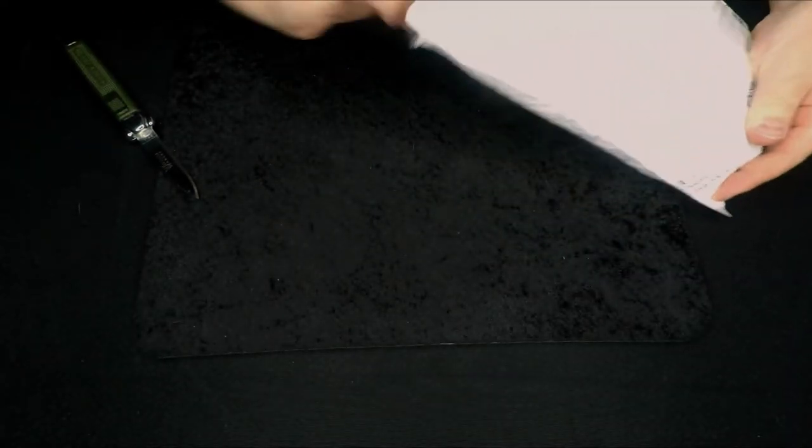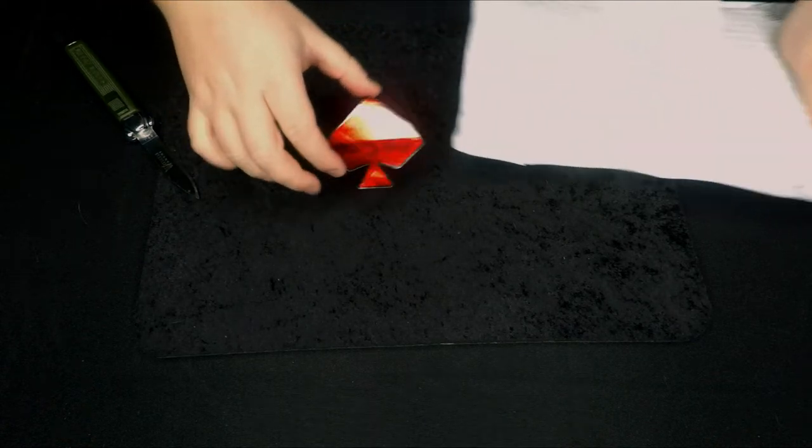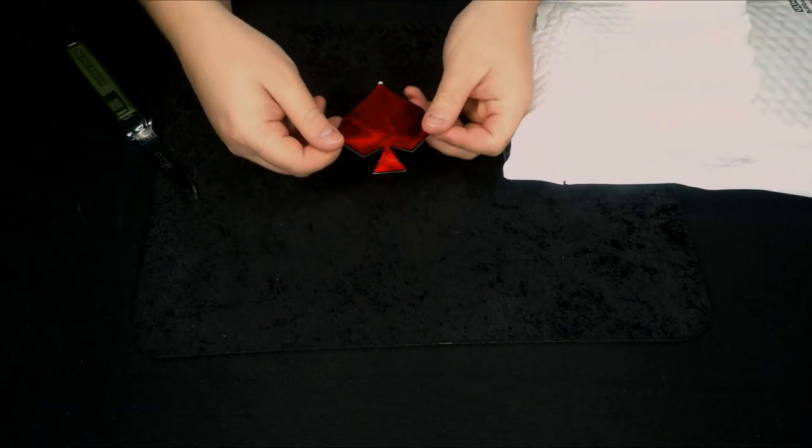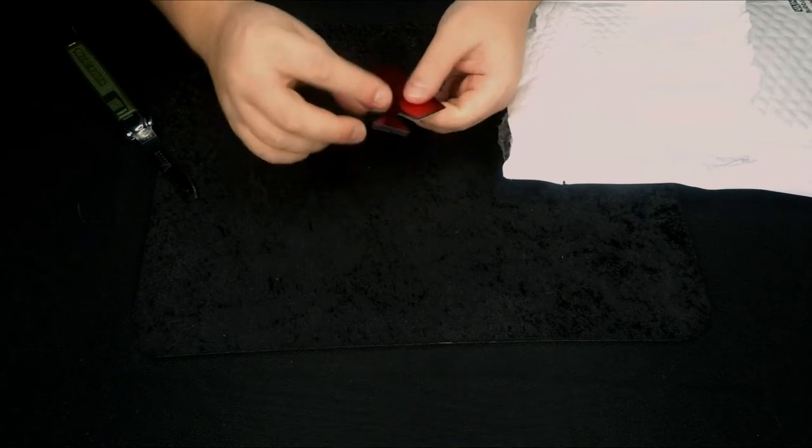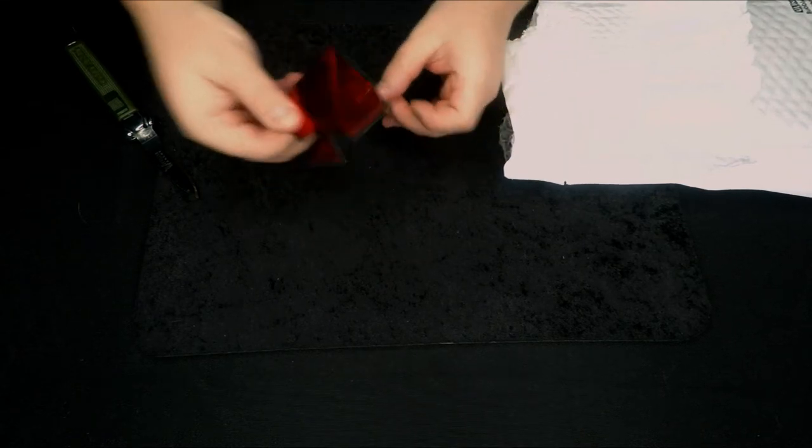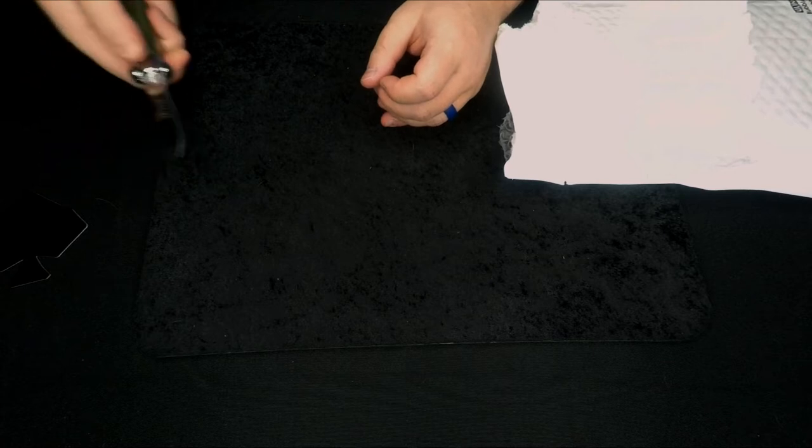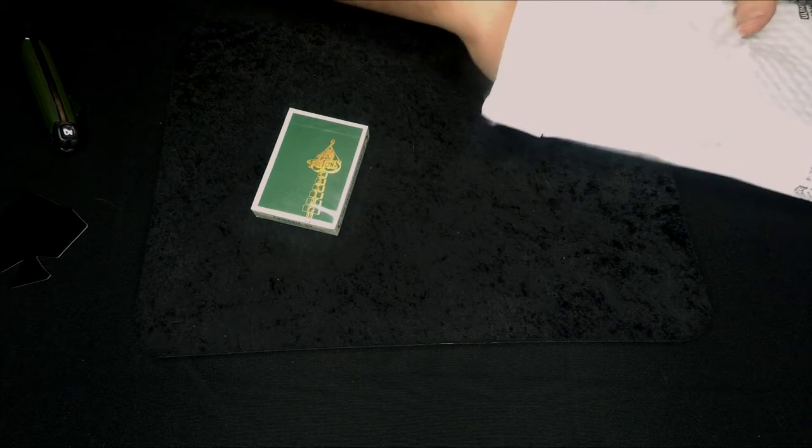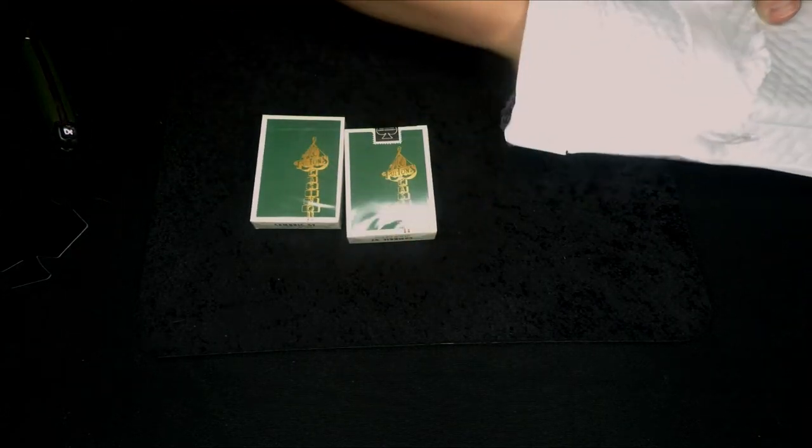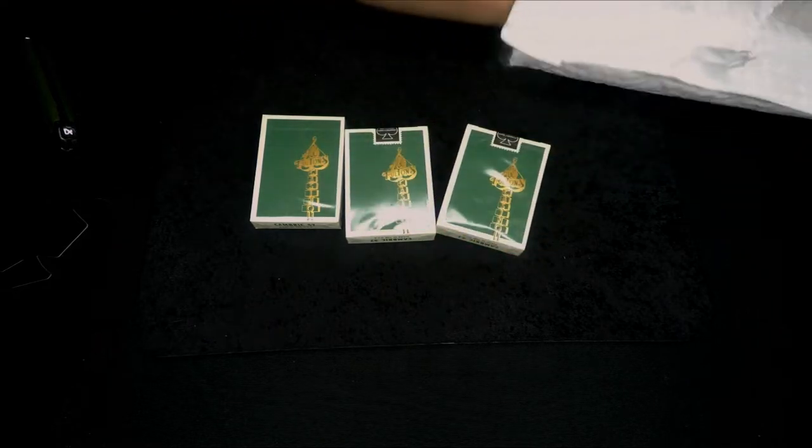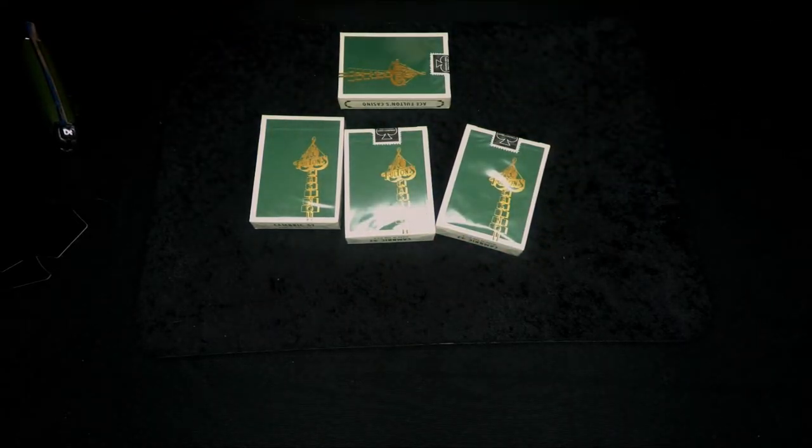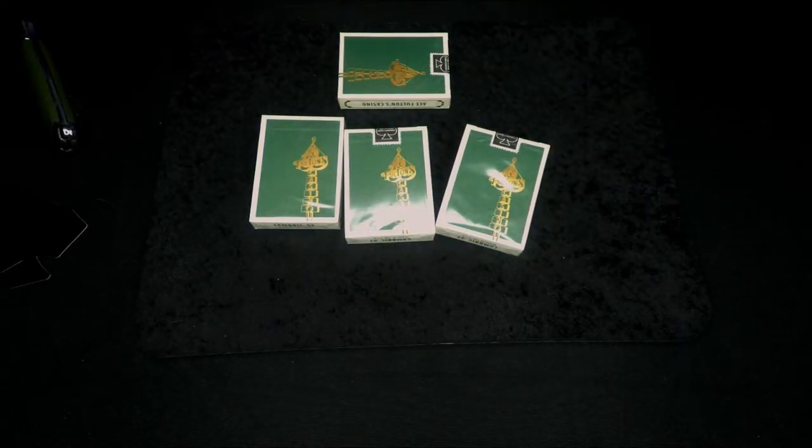So first thing, nice little Art of Play sticker. Right there, that's pretty cool. I actually really like that with the red and the metallic. I'm going to keep that right there. There we go. That's one, two, three, and four. Alright, so we can get rid of the packaging now.